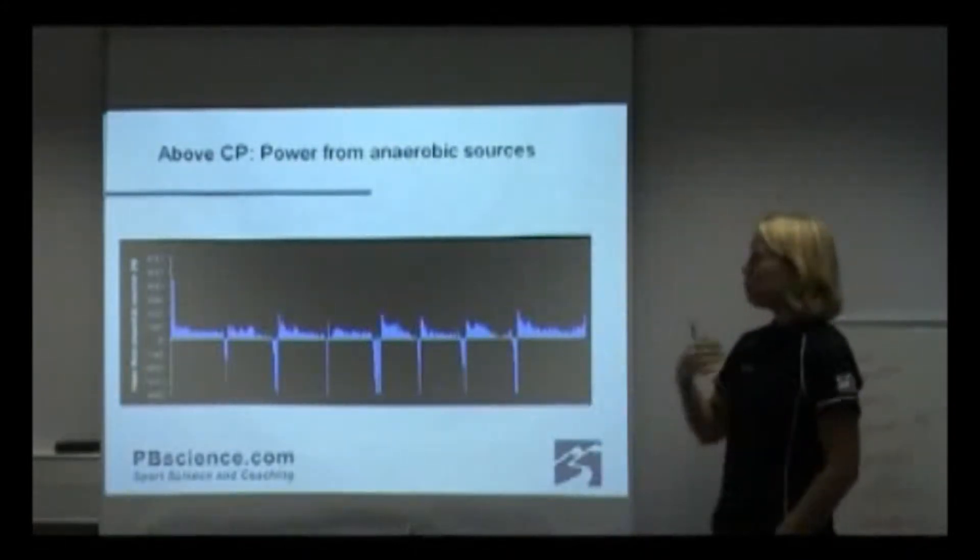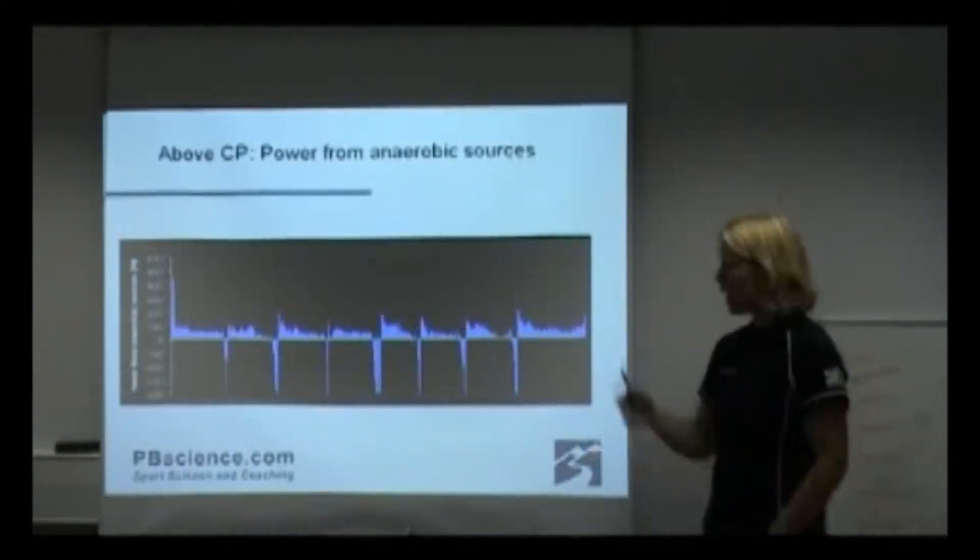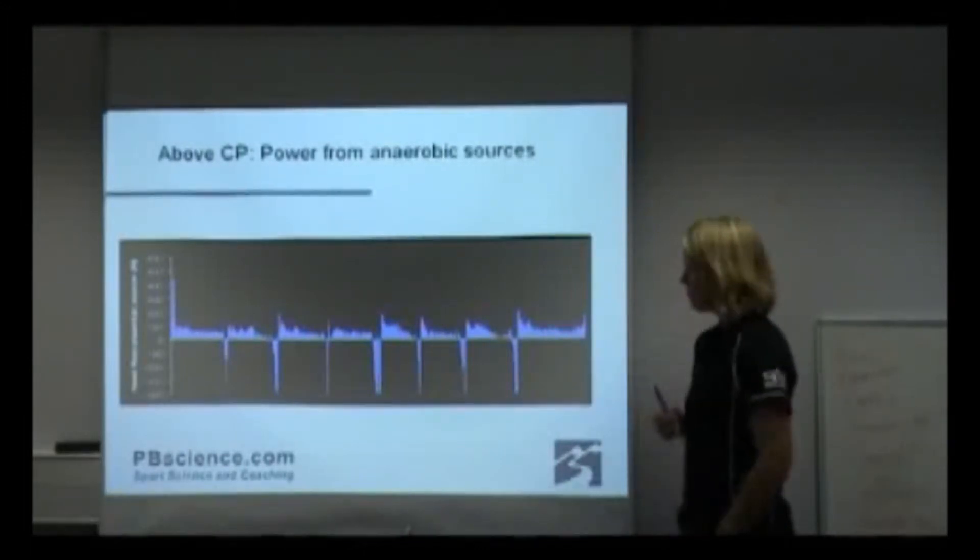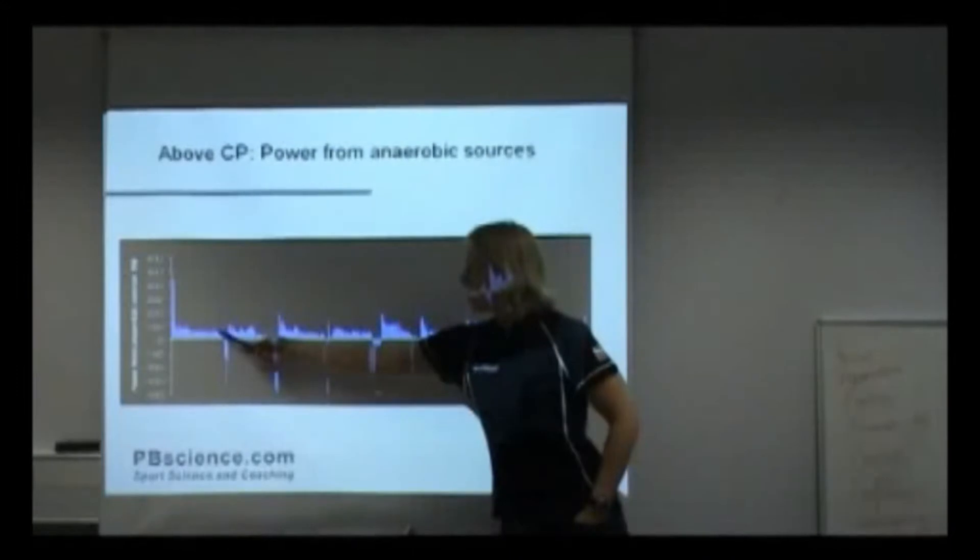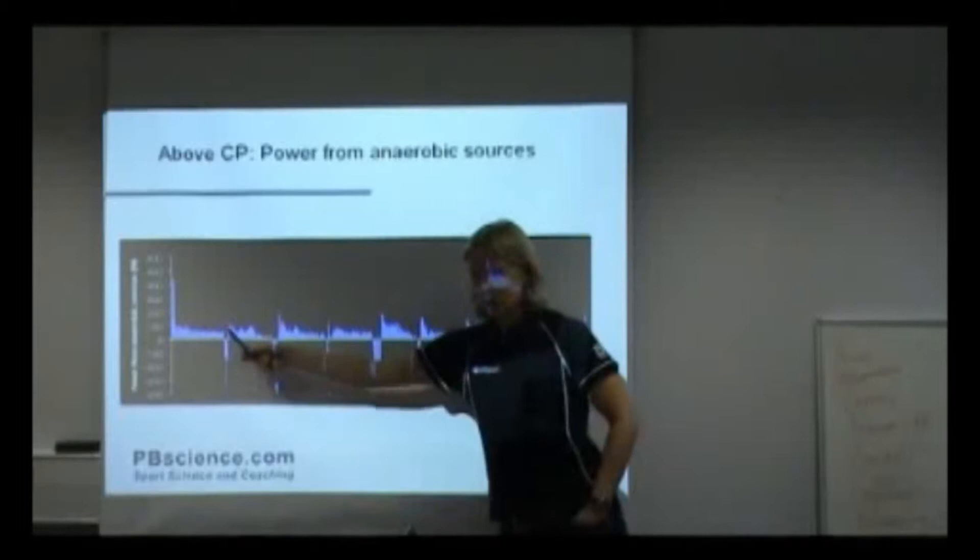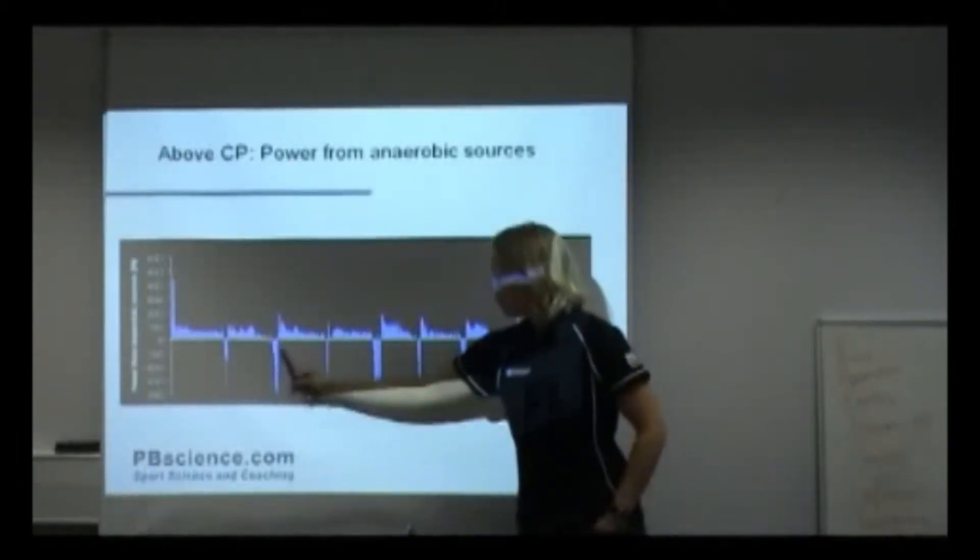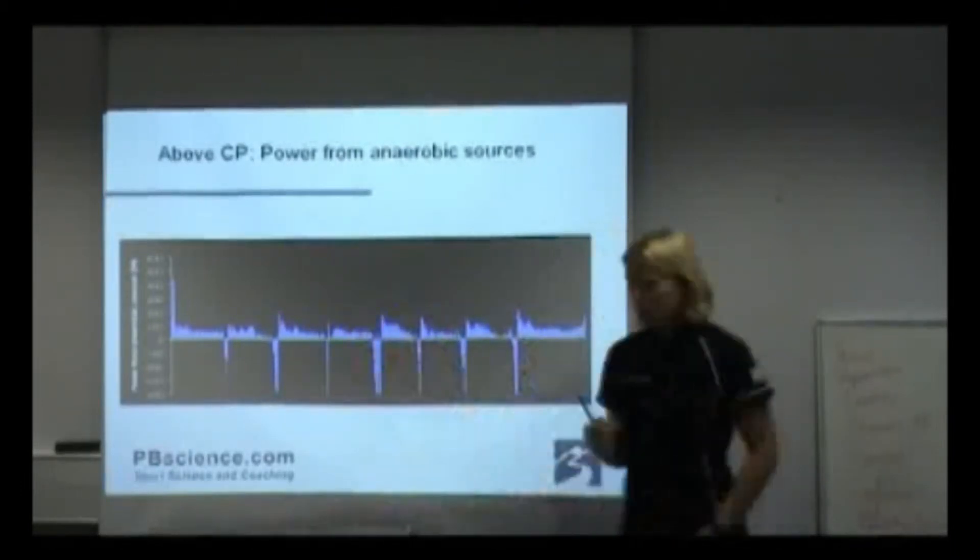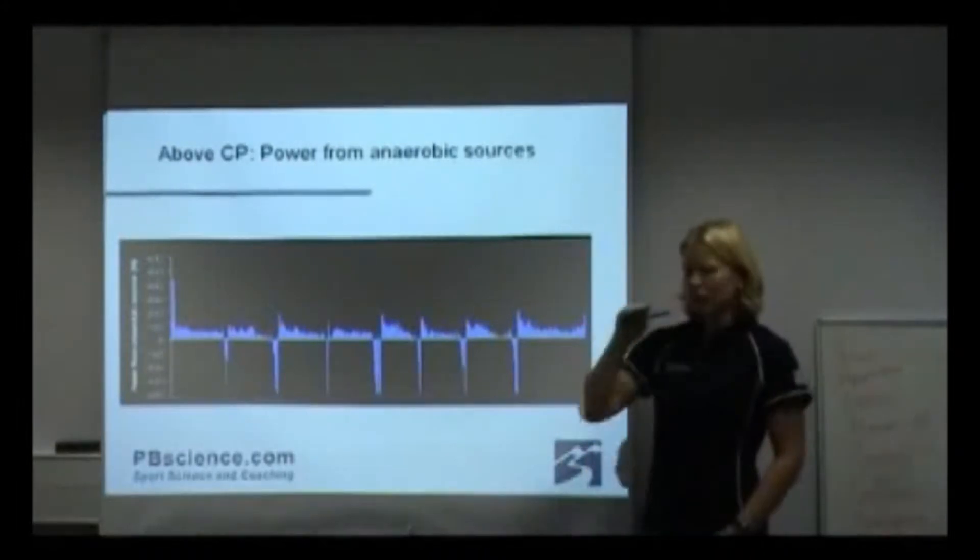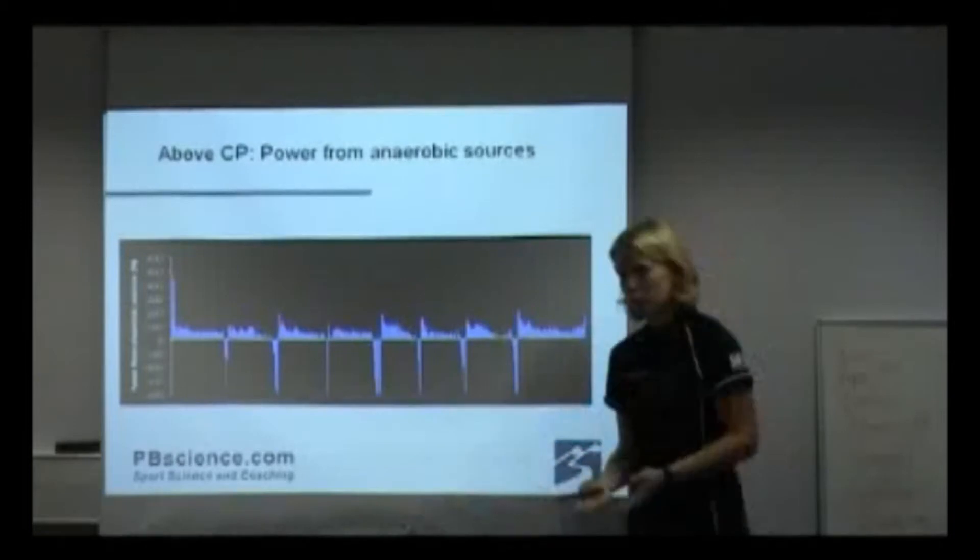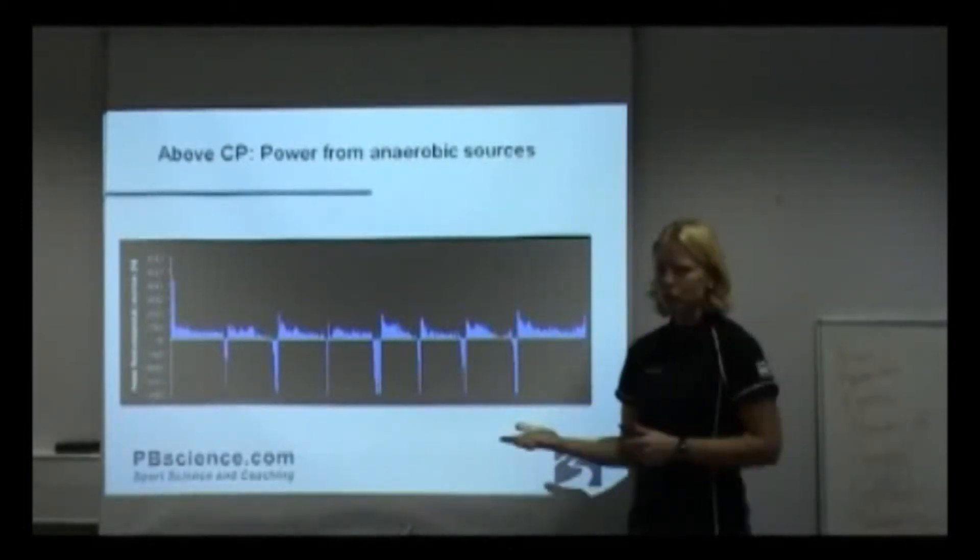When we're working above critical power, according to the theory of the power-time relationship I showed you, all of that work is anaerobic. So over a 10-mile time trial, there'll be periods of time where you work above critical power, and then you come below it, so you restore a little bit of your anaerobic capacity. Next time, you start off again, you burn a little bit of your anaerobic work capacity, and then you recover a little bit. So this is why a 10-mile time trial, you don't necessarily sit at your critical power. You'll have periods of time where you can exhaust some of your anaerobic capacity to make you go faster.